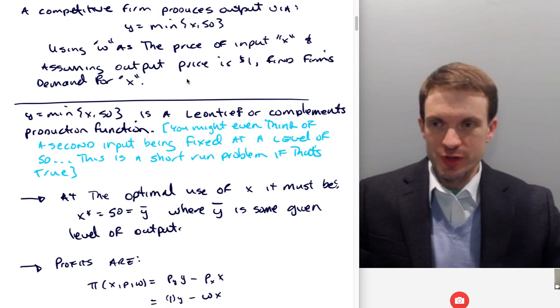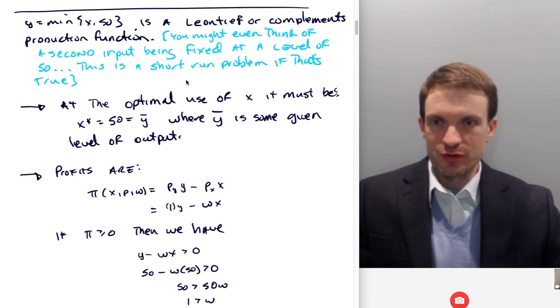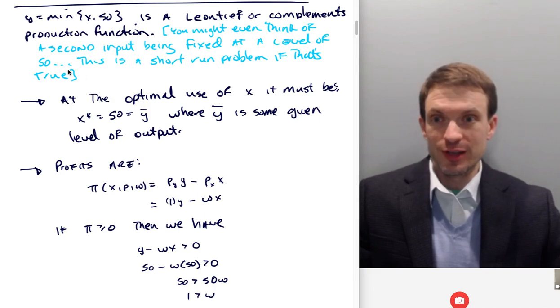Okay, so the first thing is we're staring at this, we realize we have a Leontief, or complements production function. And as a matter of fact, as you're staring at this, you're like, well, kind of, that looks sort of like what we've seen. Although this is weird, because here is a variable and here's a constant. Well, so one thing you could think about is this is a second input that has been fixed at the level of 50. And so that we have like a short run maximization problem, if that is true.